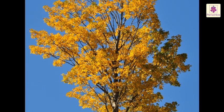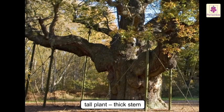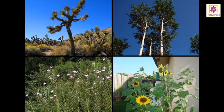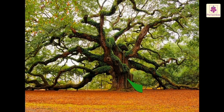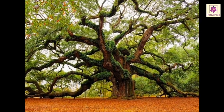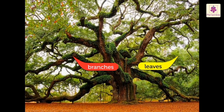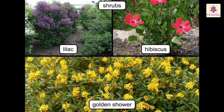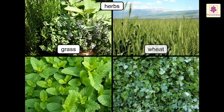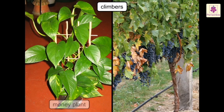Most plants have round stems, but some stems are square or rigid. The size of a plant stem depends on how many leaves and branches it has to support — a tall plant needs a thicker stem. Plants are classified on the basis of their stems. Trees are the biggest plants on earth; a tree stem is called a trunk. Shrubs like lilac, hibiscus, and golden shower have narrow but woody stems. Herbs like grass, wheat, mint, and coriander have small and soft stems.